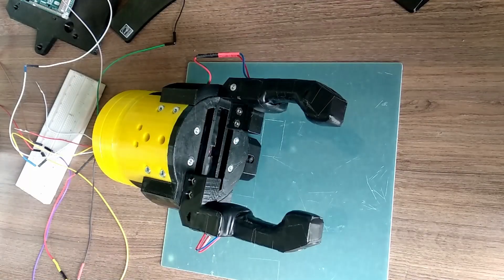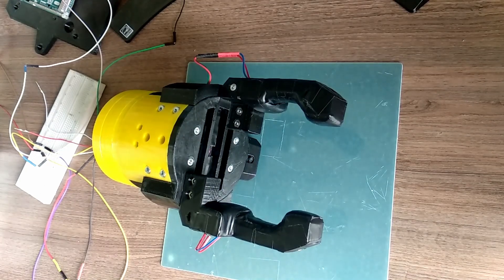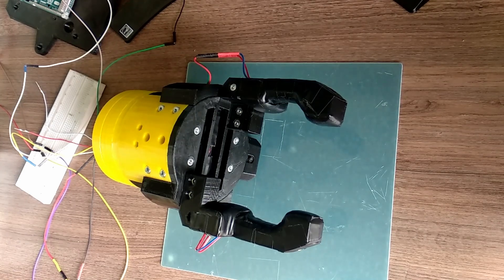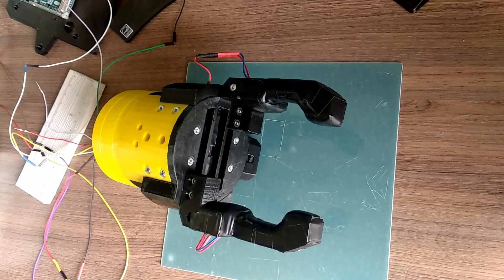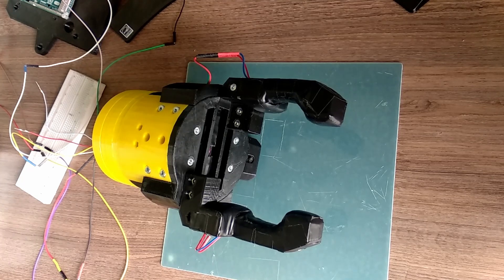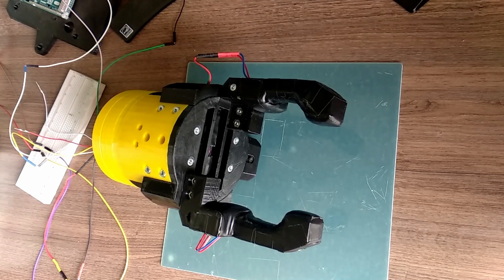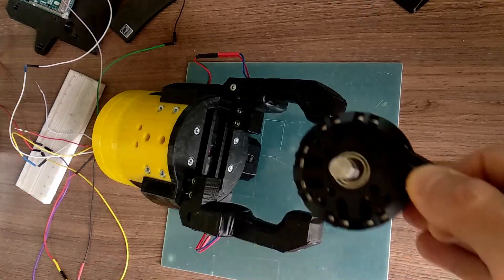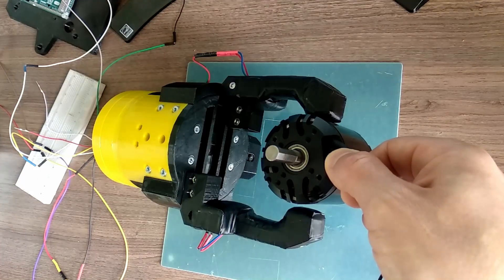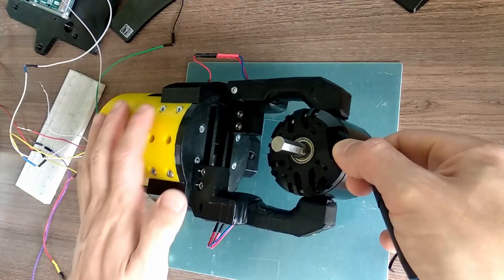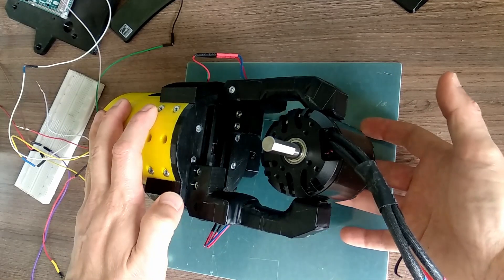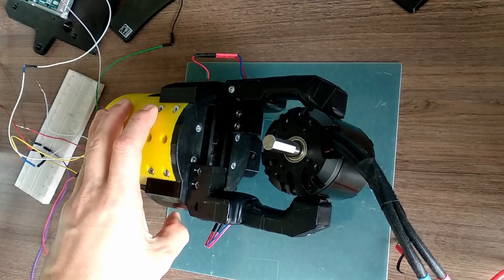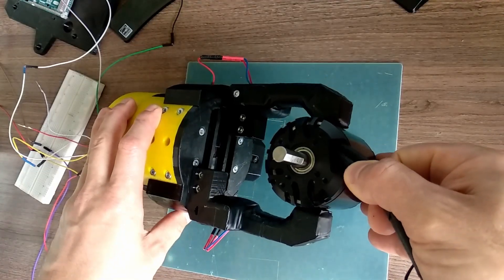As you know, gripper fingers have tactile sensors. Their reaction increases proportionally to the force applied to them. After this reaction reaches some margin, actuator stops. So I've decided to increase this margin. Let's see if this will help to increase the strength of the grip. And to my surprise, it did help. Now as you can see, the gripper squeezes the motor strong enough.